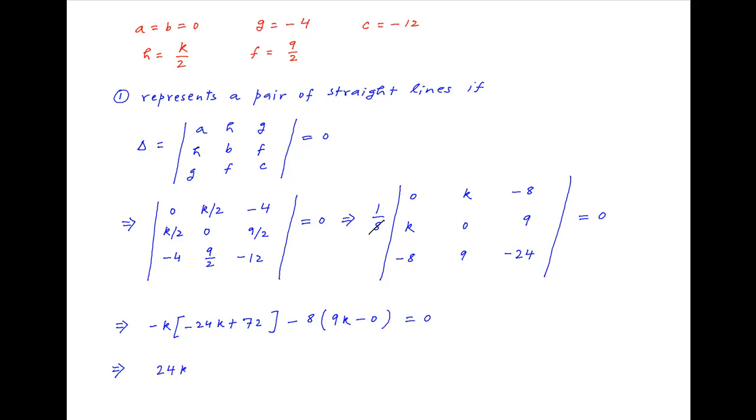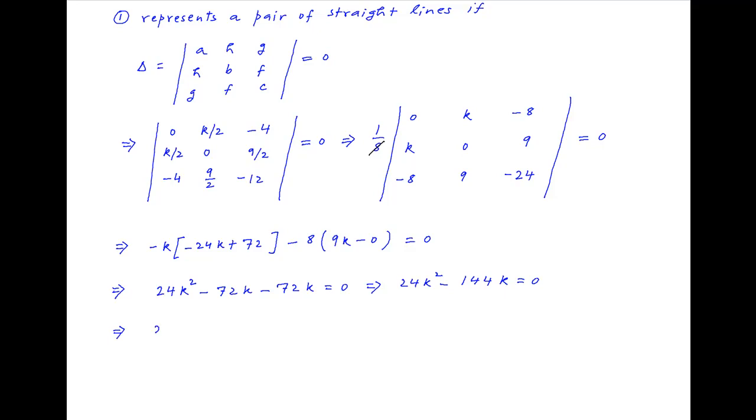This simplifies to 24k² minus 72k minus 72k is equal to 0, which implies that 24k² minus 144k is equal to 0. Therefore 24k times (k minus 6) is equal to 0, which implies that k should be equal to 0 or k should be equal to 6 for the given equation to represent a pair of straight lines, and this is the required answer.